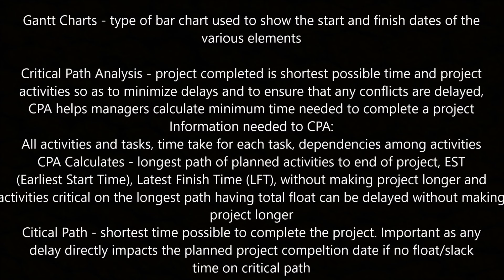Gantt charts are a type of bar chart used to show the start and finish dates of various elements. Critical path analysis is used to complete the project in the shortest time, minimising delays and ensuring conflicts are addressed. The CPA helps managers calculate the minimum time needed to complete a project. Information needed for CPA includes all activities and tasks, time to take for each task, and dependencies among activities. The CPA calculates the longest path of planned activities to end the project, the EST (earliest start time), the latest finish time (LFT), and identifies activities on the critical path. Critical path is the shortest time possible to complete the project, and any delay directly impacts the planned completion date if there is no float or slack time.